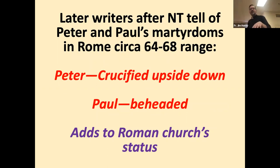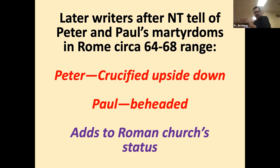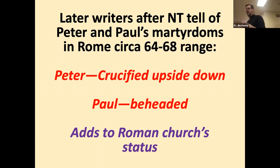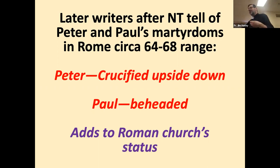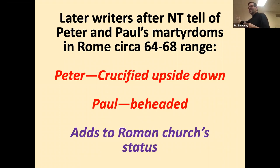Later non-New Testament writers tell us about Peter and Paul's martyrdoms. They both die in Rome, probably around 64 AD. Peter is crucified upside down — he asked for this because he regarded himself unworthy to die as Jesus died — and Paul is beheaded as a Roman citizen, since crucifixion was for slaves and foreigners. The fact that both most important apostles died in Rome helps lift Rome's prestige as an important center of the church.